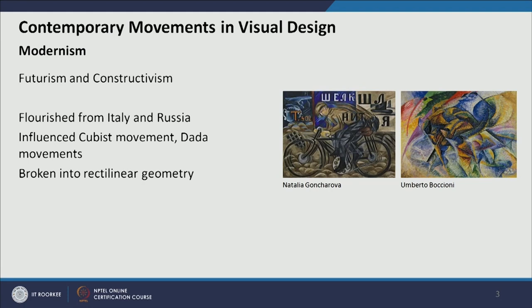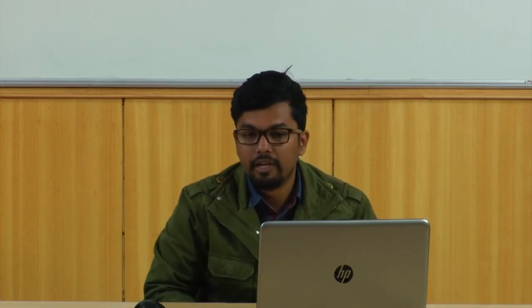In futurism and Russian constructivism, which flourished in Italy and Russia, the focus is on motion — depicting a sense of time dimension within the picture, creating a sense of movement. For example, in some paintings of animals you can see four or five legs depicted with less color intensity to give a sense of dynamism, suggesting the animal is walking. This concept of capturing time came more prominently into cubism in a later phase and to a higher degree.